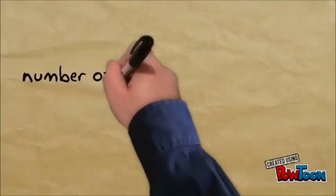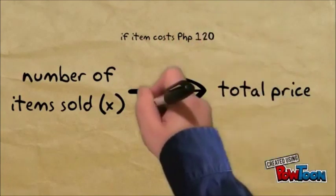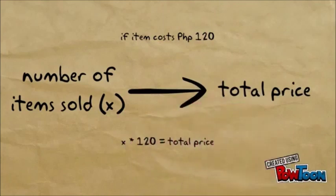Under the example, the number of items determines the total price. If an item costs 120 pesos, we can determine the total price by multiplying the number of items by 120 pesos.